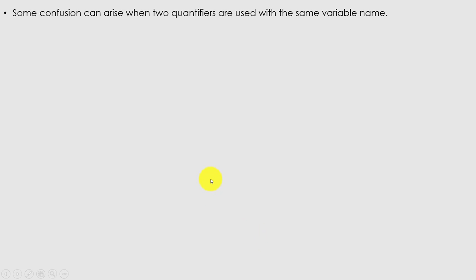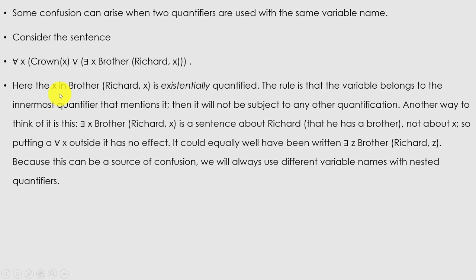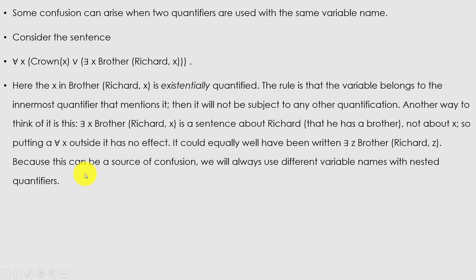On the other hand, to say 'there is someone who is loved by everyone' we write the quantifiers in the opposite order. The order of quantification is therefore very important — it becomes clearer if we insert parentheses. ∀x ∃y Loves(x,y) says everyone has the property that they love someone. ∃y ∀x Loves(x,y) says someone in the world has the property of being loved by everyone. Some confusion can arise when two quantifiers are used with the same variable name — the rule is that the variable belongs to the innermost quantifier that mentions it.